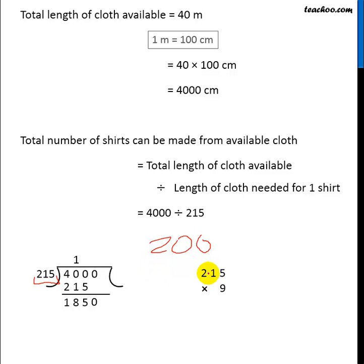We know that 2 into 9 is 18, so 200 into 9 will be closer to 1800 or something. Let's check. 215 into 9: 9 into 5 is 45, so 5 will go here, 4 will go on top of 1. 9 into 1 is 9, 9 plus 4 is 13. 3 will go here, 1 will go on top of 2. 9 into 2 is 18, 18 plus 1 is 19. 1935. Now 1935 is greater than 1850, so 215 into 9 will not work.